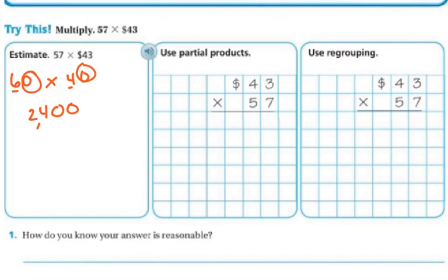So let's use partial products. With using partial products, they want us to do the tens first. They want us to do 5 tens times 4 tens. So that's essentially saying 50 times 40. And when you multiply 50 times 40, you get 2,000, because 5 times 4 is 20 and then I have my 2 zeros.